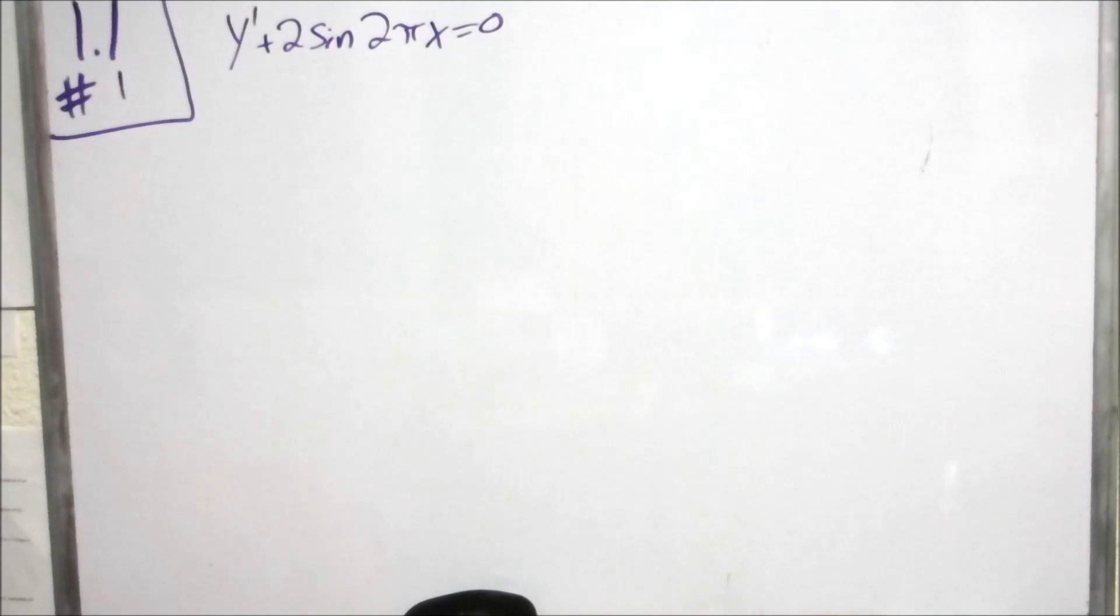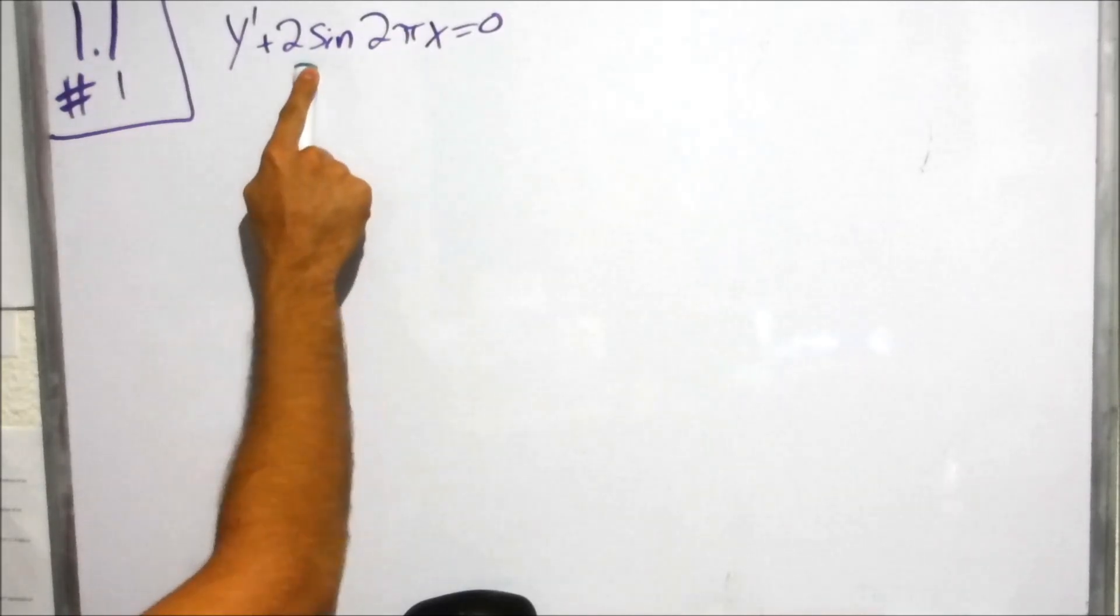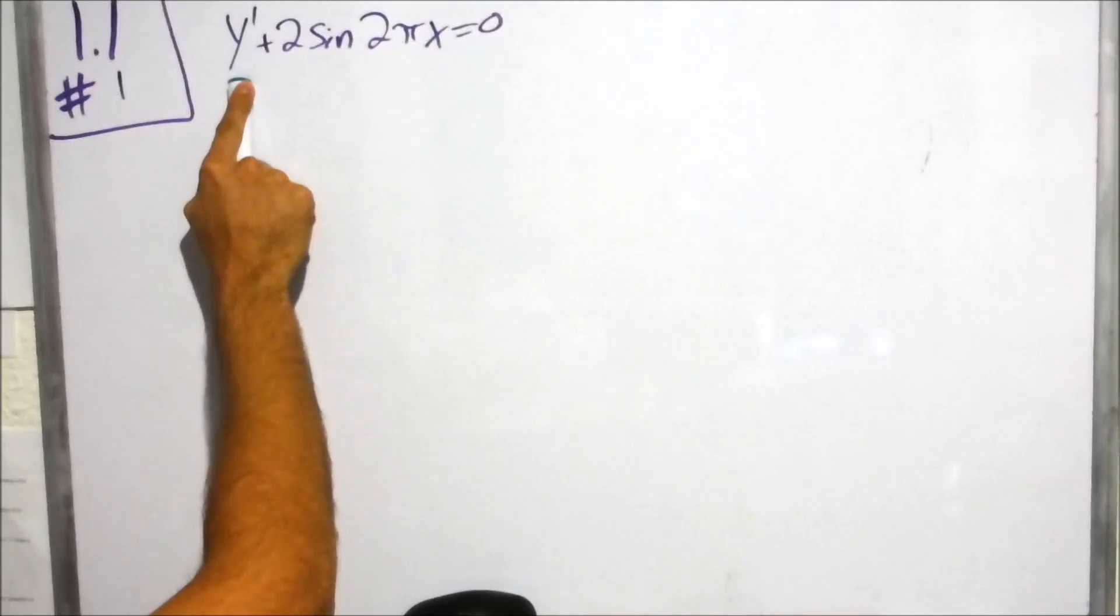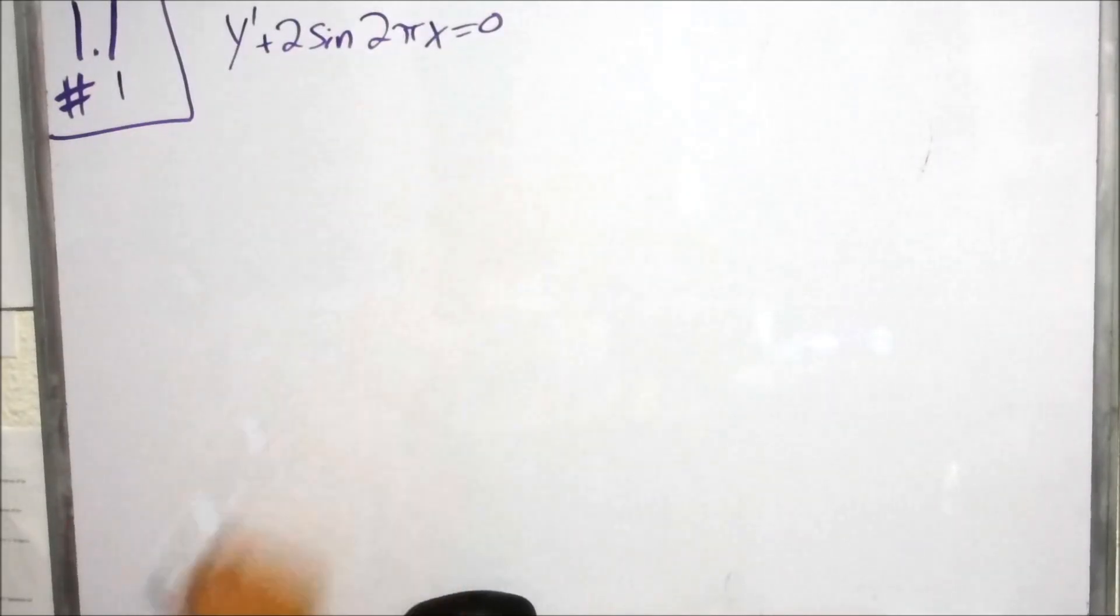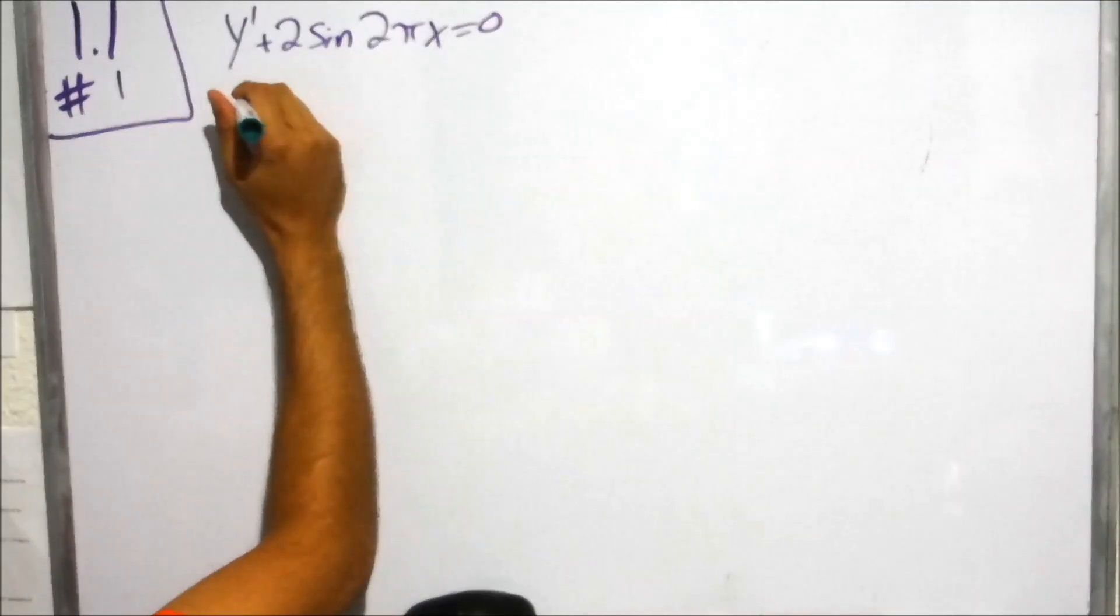Alright, so in this problem, we are asked to find the general solution of this differential equation: y prime plus 2 sine of 2 pi x equals 0. So the first thing you want to do, of course, is to get all of the y terms on one side and all of the x terms on another. That's fairly simple.